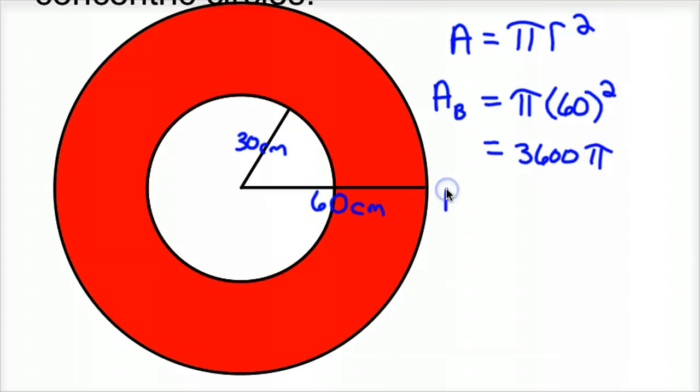And then the area of the small circle, so area with a little s for small circle, because this radius is only 30, is π times 30 squared. Oops, I missed the third. So π times 30 squared. Alright, and so that one would simplify to 900π.